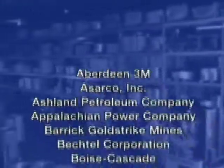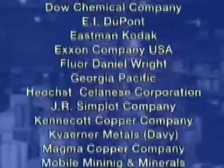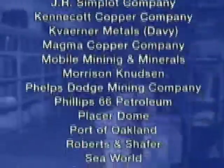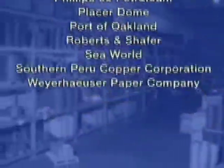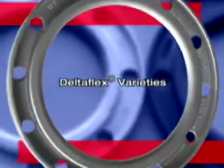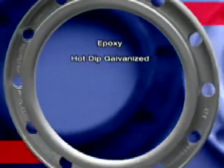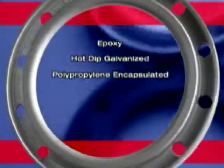One look at the list of customers and projects IPP has supplied will show that DeltaFlex is recognized worldwide as the preferred backing ring for use on HDPE pipe. DeltaFlex are made of ductile iron and are available in a variety of coatings such as epoxy, hot dip galvanized, and our new polypropylene encapsulated.